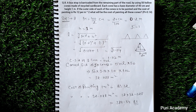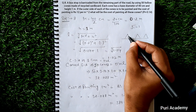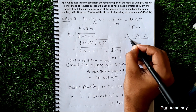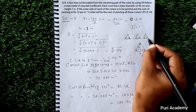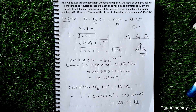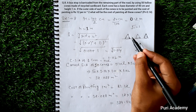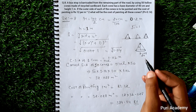A bus stop is barricaded from the remaining part of the road. The barricades are cone-shaped. We have the first cone barricade, the second barricade, and here is the third barricade. So we have 50 cones barricading the road. We have a single cone here to examine.